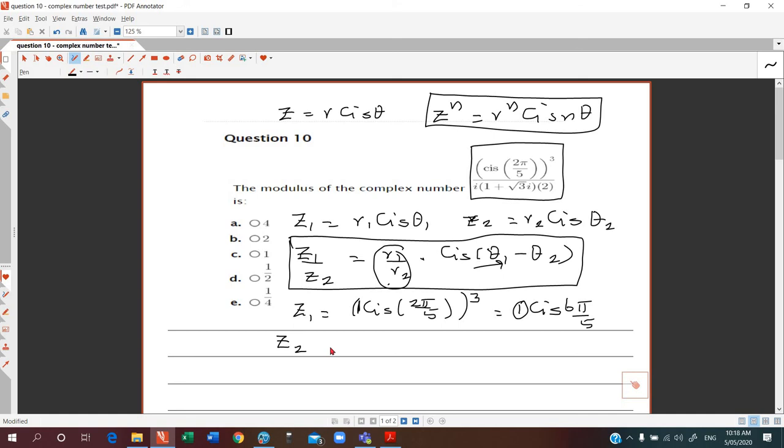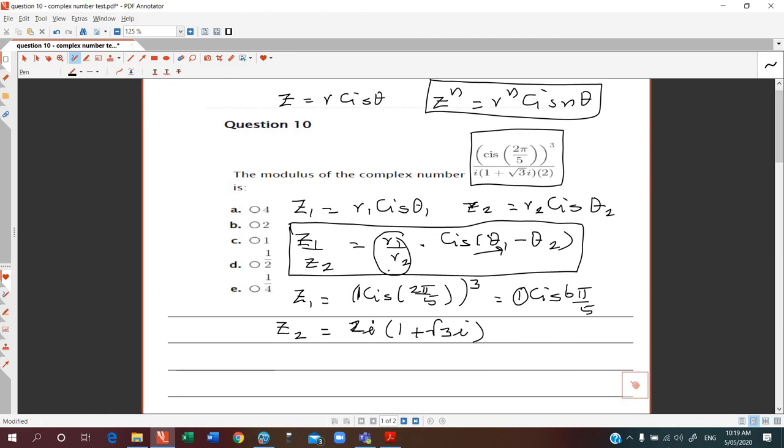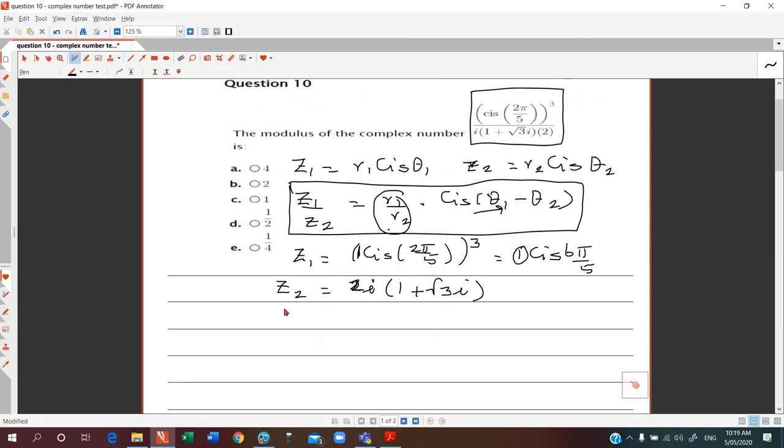Now z2 is in rectangular form, so z2 is 2i times (1 + √3i). Let's expand this. This is going to be 2i plus 2 times √3 i². I hope you know i² is negative 1, so z2 is going to be -2√3 plus 2i.